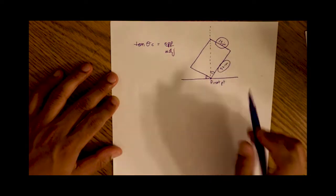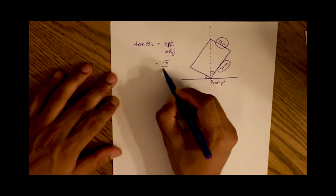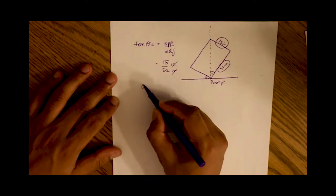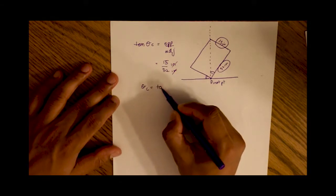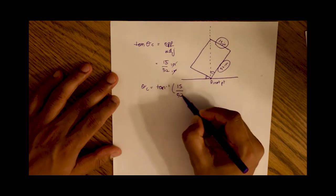And we know our opposite is 15 and our adjacent is 52. The inches cancel. So our critical angle before it tilts over is tan inverse of 15 over 52.